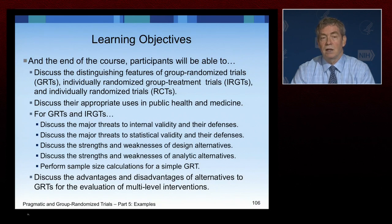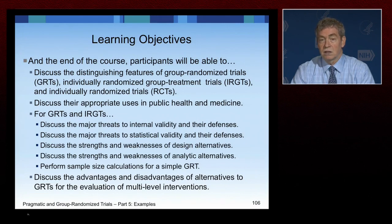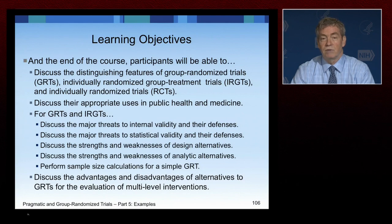Participants will be able to discuss the appropriate uses of these study designs in public health and medicine. For group randomized and individually randomized group treatment trials, they will discuss the major threats to internal validity and to statistical validity. We'll be able to talk about the strengths and weaknesses of design alternatives and analytic alternatives, and perform sample size calculations for a simple group randomized trial. Participants will also be able to discuss the advantages and disadvantages of alternatives to group randomized trials for the evaluation of multi-level interventions.